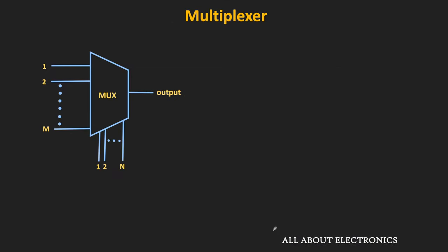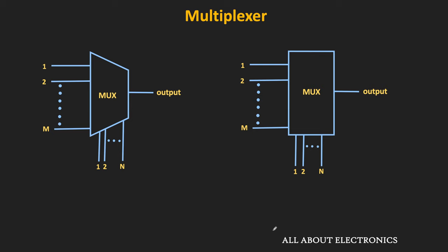The multiplexer is a combinational circuit which has M inputs and 1 output. Apart from that, it also has M selection lines. This is the block diagram of the multiplexer, though it is also represented in another fashion, and in this video we will use that second representation. The multiplexer is often referred to as MUX. If the multiplexer has n selection lines, then the total number of inputs is equal to 2 to the power n. Or in other words, if the multiplexer has M inputs, then the total number of selection lines is log M to the base 2.